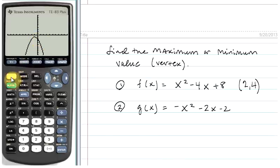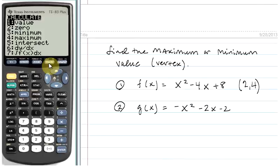Now, you may remember when we hit the second and then trace button, we have the calculate menu. One of the options, option number 3 was the minimum. Option number 4 is the maximum. So in this case, we'll scroll down to option number 4 and hit enter.